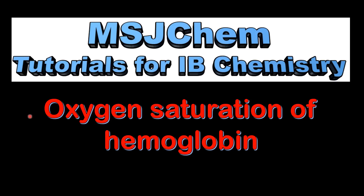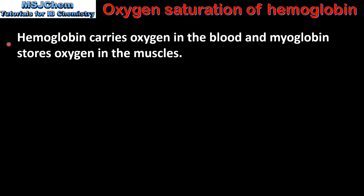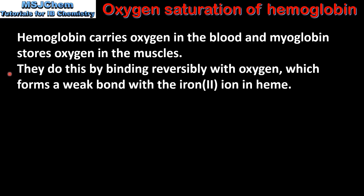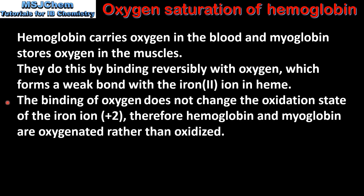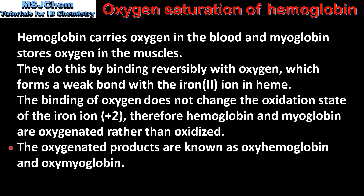In this video I'll be looking at the oxygen saturation of haemoglobin. As we saw in the previous video, haemoglobin carries oxygen in the blood and myoglobin stores oxygen in the muscles. They do this by binding reversibly with oxygen, which forms a weak bond with the iron ion in heme. The binding of oxygen does not change the oxidation state of the iron ion, which remains at plus 2. Therefore haemoglobin and myoglobin are oxygenated rather than oxidized. The oxygenated products are known as oxyhaemoglobin and oxymyoglobin.